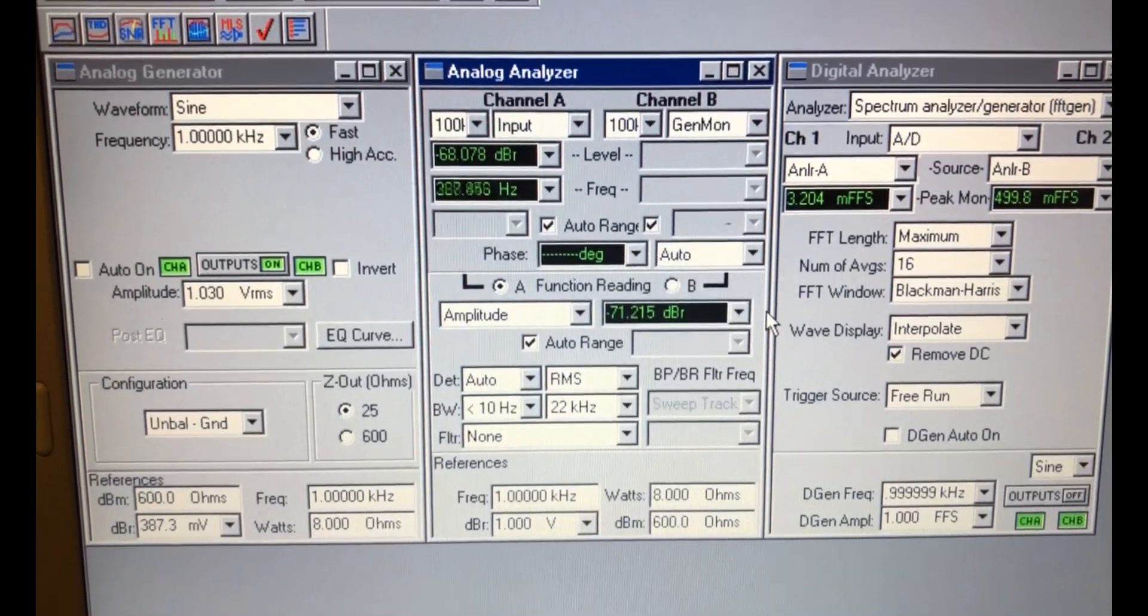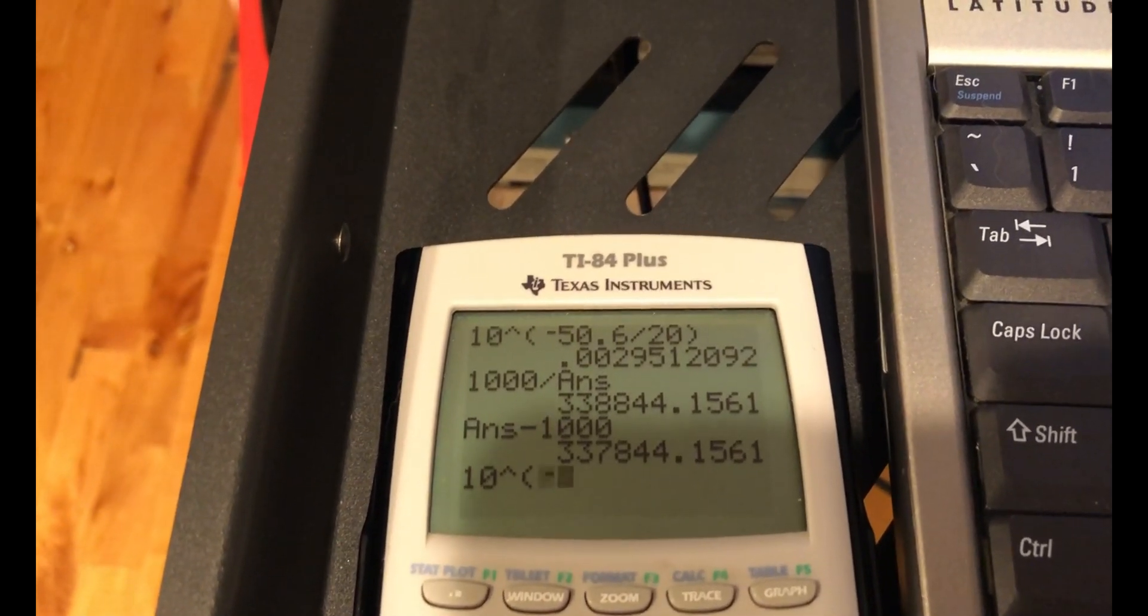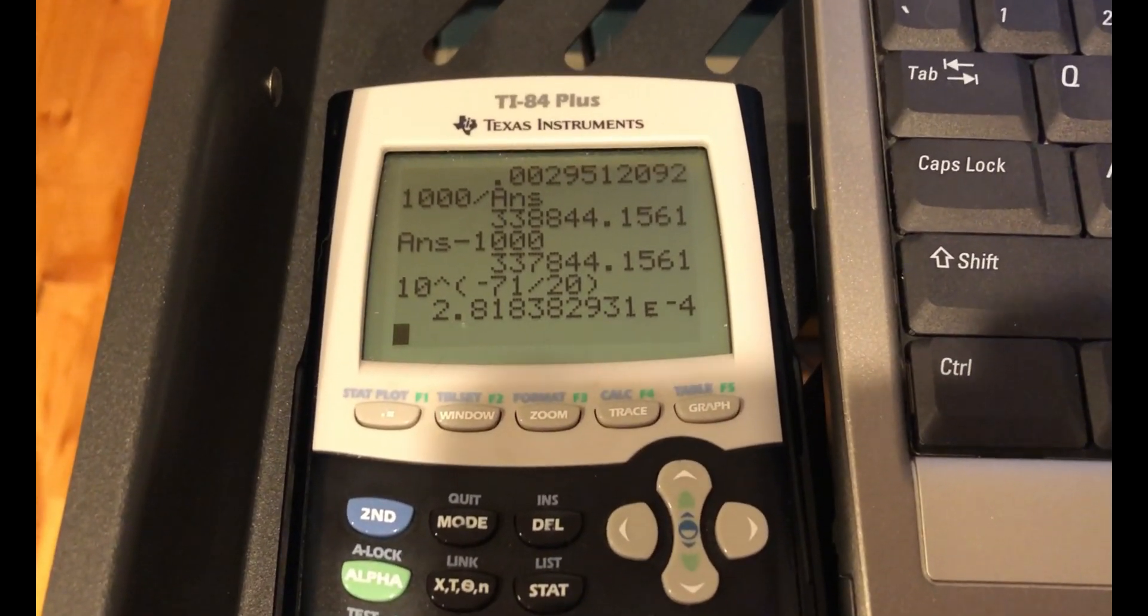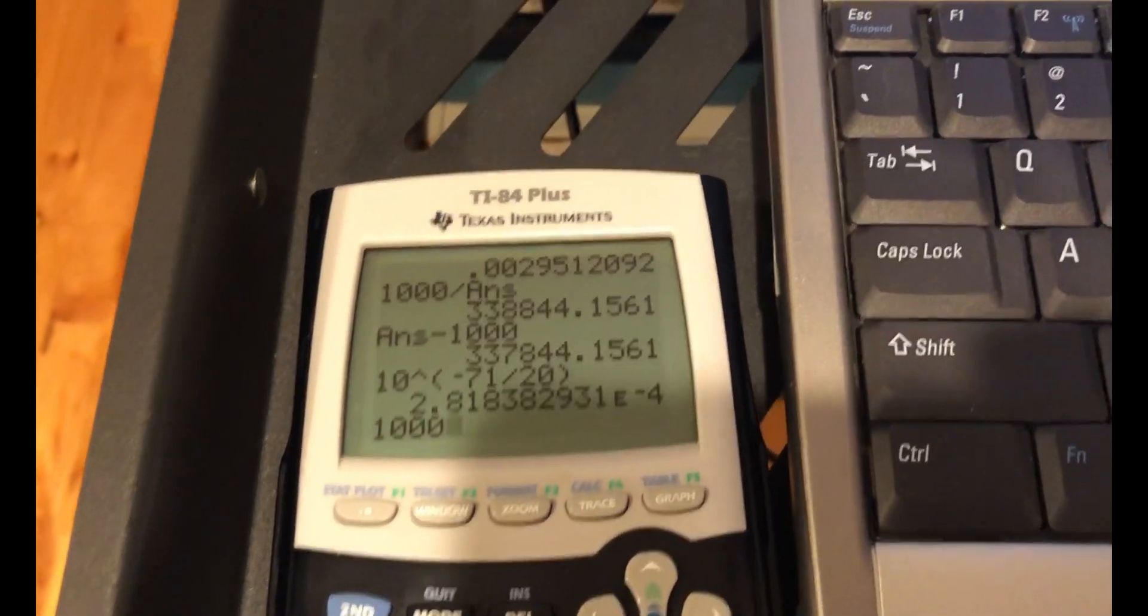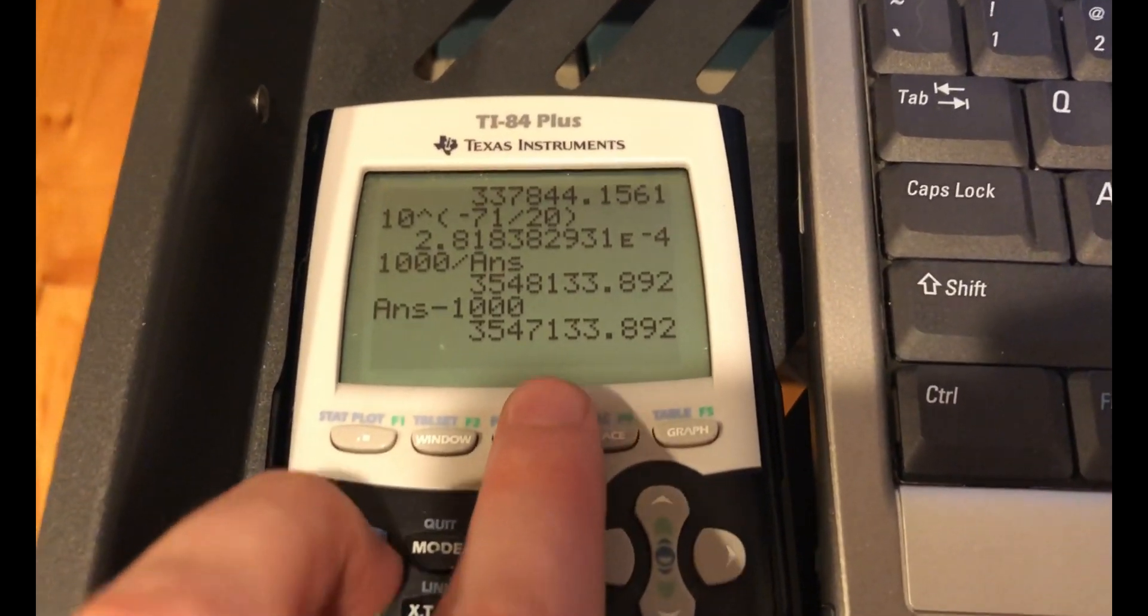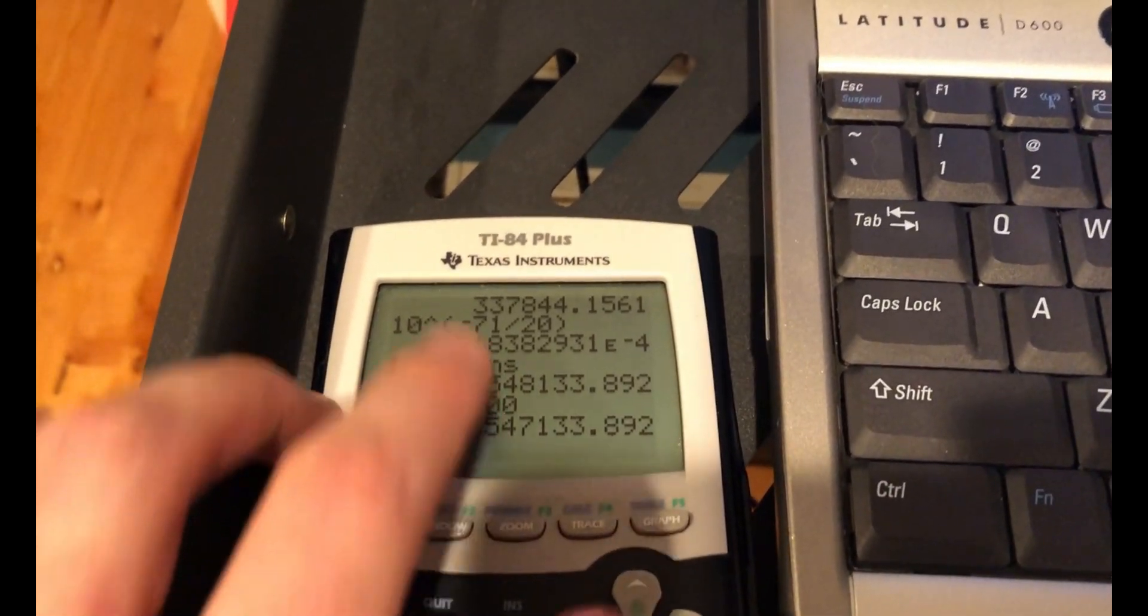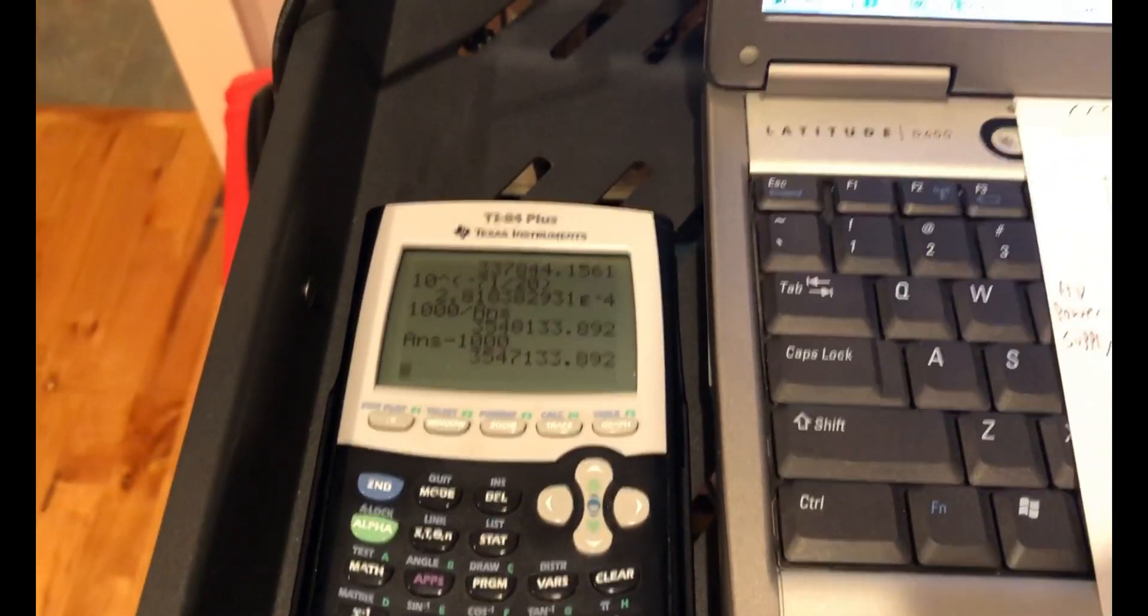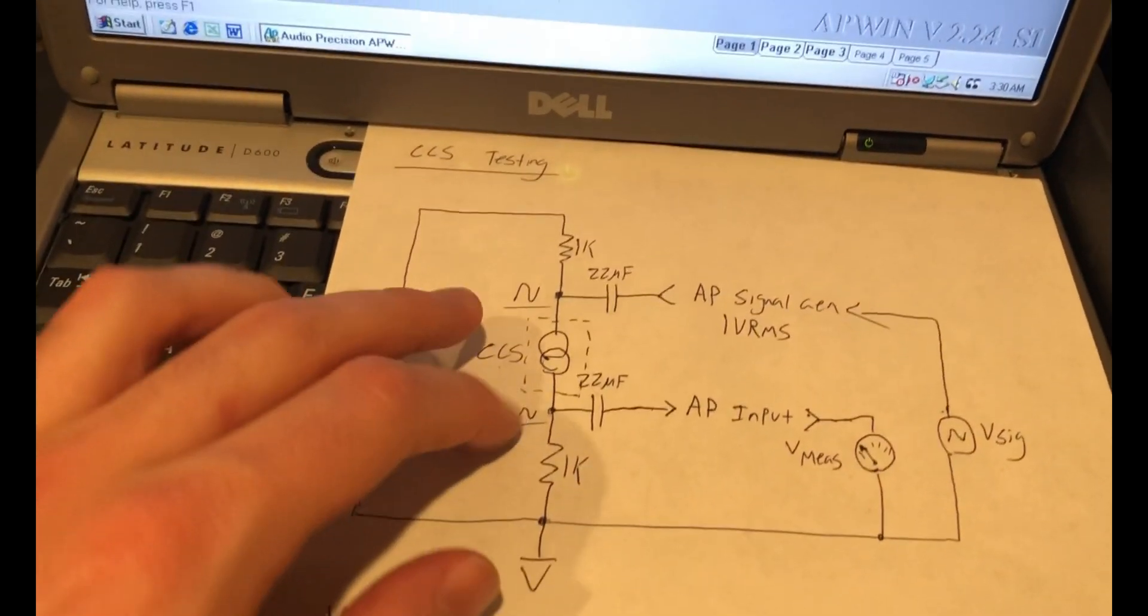So let's run this math again at 71 dB. We'll do 10 raised to negative 71 divided by 20. That's our new gain. That's a linear gain. So we converted dB to a linear gain number. 1,000 divided by that gain minus 1,000. So you can see 3.5 mega ohms. So we went nearly 10x. 300k in the previous example to 3.5 mega ohms in this example. So the operating voltage across the constant current source has a big impact on its performance.